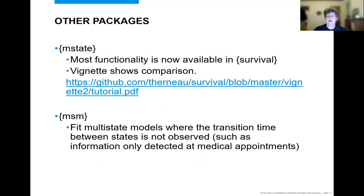There are two other main packages in R for multi-state analysis, including M state and MSM. And for the most part, the functionality of the M state package is now available in the survival package. And there's a vignette in Terry's GitHub site that shows an example of that. The MSM package provides functions for fitting continuous time Markov and hidden Markov multi-state models where the transition times aren't exactly known. And these scenarios are beyond the scope of the survival package.